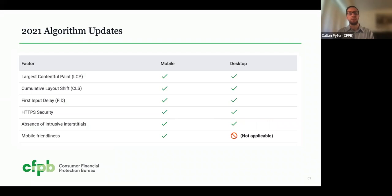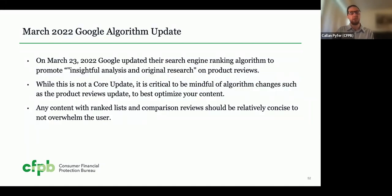To summarize the top 2021 algorithm ranking factors from Google: largest contentful paint, cumulative layout shift, first input delay, making sure the site is secure with HTTPS, ensuring no intrusive interstitials, and having the site be mobile-friendly — all very important in 2022 and beyond. The most recent update was not a core update but focused on product reviews, released on March 23rd of this year, promoting insightful analysis and original research. The main takeaway is that content with rank lists and comparison reviews should be relatively short, as Google found long content in those categories would overwhelm the reader.